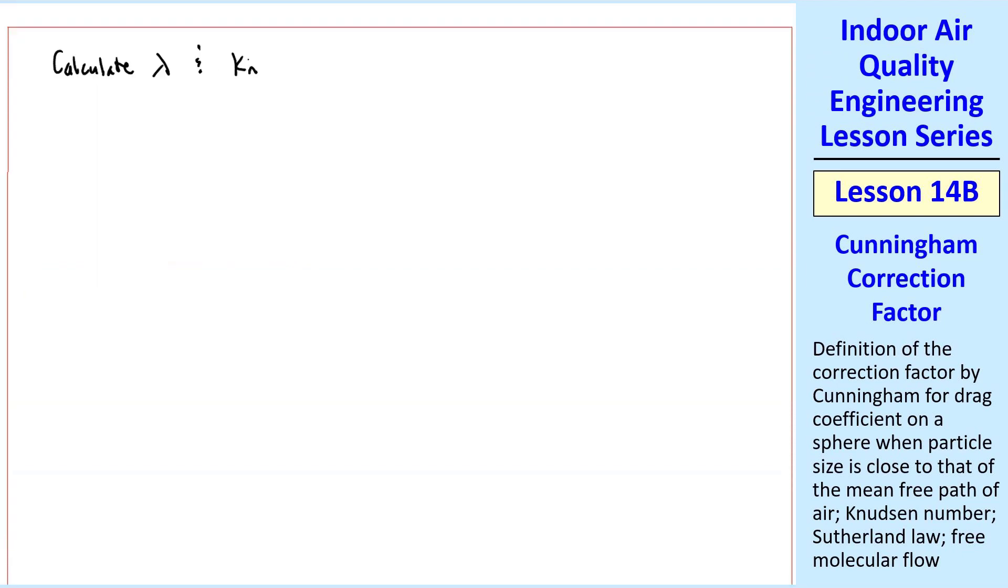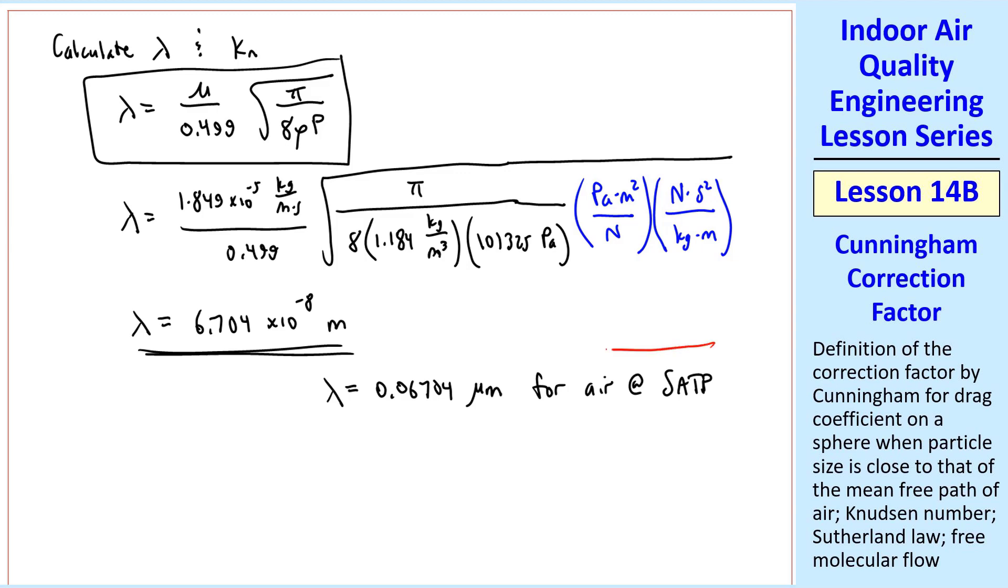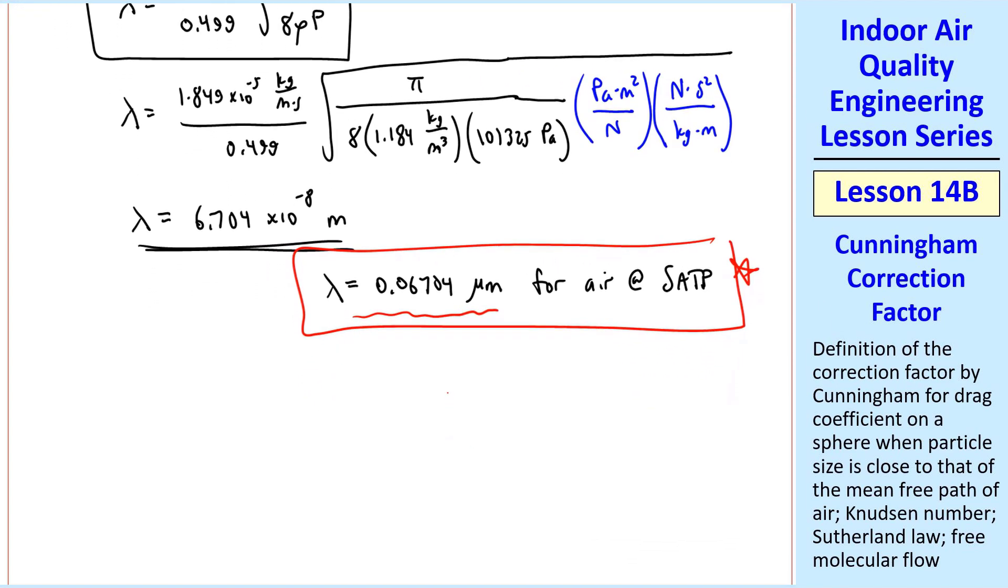Now back to our example problem. We also want to calculate lambda and Knudsen number. We use this equation for lambda. We plug in our viscosity, our density, and our pressure. We need a conversion factor for pascals and another one for newtons. And we get lambda equals 6.704 times 10 to the minus 8th meters. I'll write this as 0.06704 microns for air at standard ambient temperature and pressure. This lambda is very small, but for submicron particles, in other words particles that are smaller than a micron, the free molecular effects become significant as was mentioned previously.